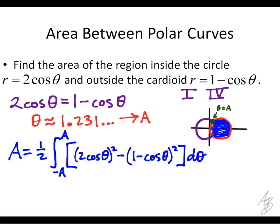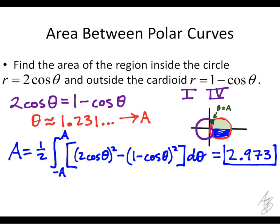Once we have that integral, we just plug it into the calculator — this is a calculator question. You can type negative A for the lower limit and positive A for the upper limit. The symmetry is also useful: if you just find the area in the first quadrant from 0 to A and double it, you get the same result — just drop the one-half and go from 0 to A. When we type this into our calculator, we get 2.973. That's the area inside of the circle and outside of the cardioid.